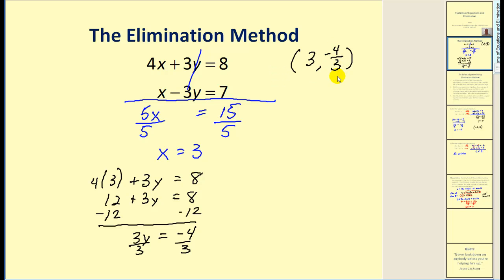We have one solution for this system. Therefore, the system is consistent and independent. You can see this method works very nicely. It's much faster than trying to graph these two linear equations and estimate a point of intersection.